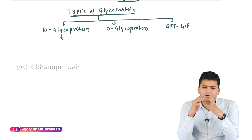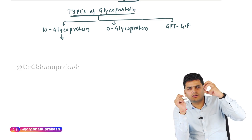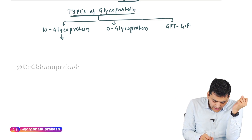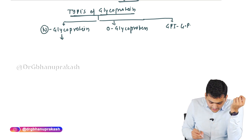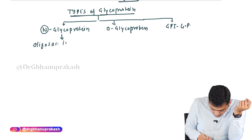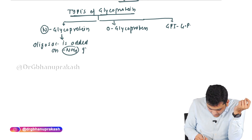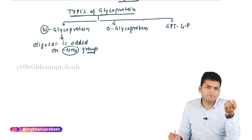In the N-type of glycoprotein, the oligosaccharide is added on the amino group of the protein. N stands for the amino group. So if the oligosaccharide is added on the amino group, that is called the N-type of glycoprotein.